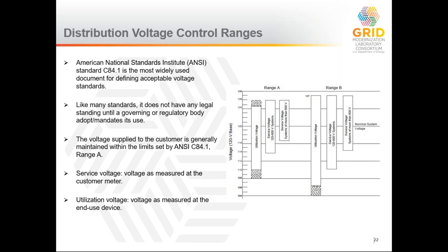In North America, the most commonly used voltage standard is ANSI C84.1. Most public utility regulators select this as the standard, which basically specifies that voltage should remain within a range: typically 120 volts up to 126 and down to 114, so plus or minus five percent. This standard has no legal standing until a regulatory body sets it as the standard, and it is measured at the customer meter. Single-phase residential houses receive 120/240 volts, so this can be scaled to 240 as well.